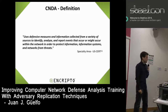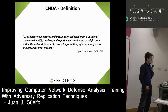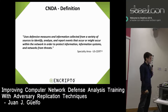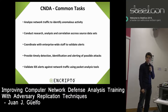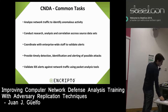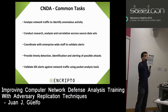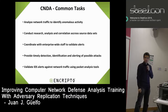For clarity, according to the USERT, computer network defense analysis is a specialty area. It uses defense measures and information collected from a variety of sources to identify, analyze, and report events that occur or might occur within the network in order to protect information, information systems, and networks from threats. Common tasks listed in the CNDA job description include analyzing network traffic to identify anomalous activities, conducting research and correlation across different data sets, and coordinating with enterprise-wide staff to validate alerts.